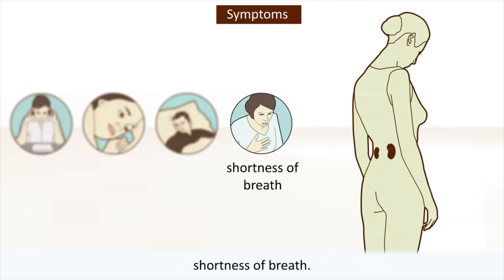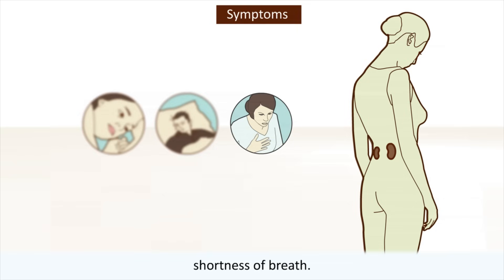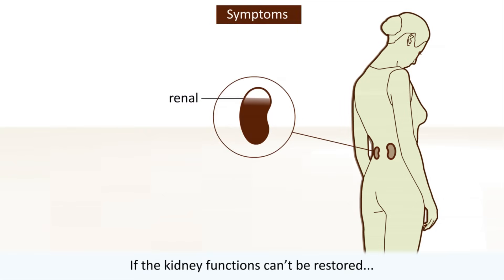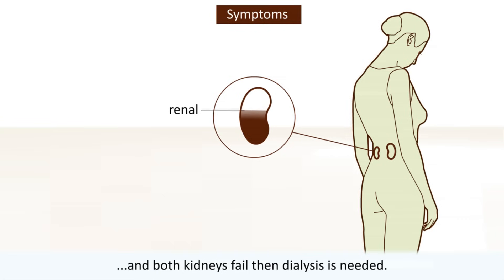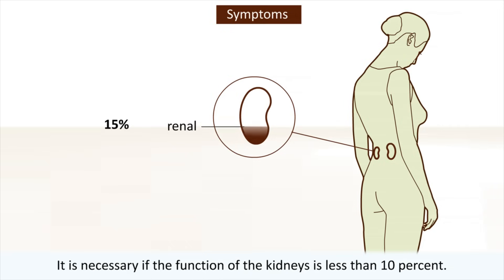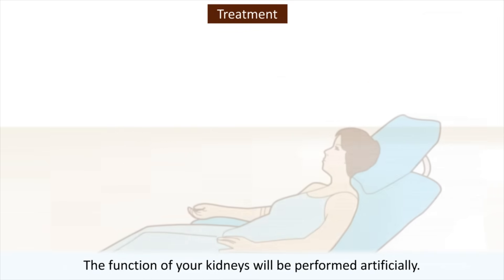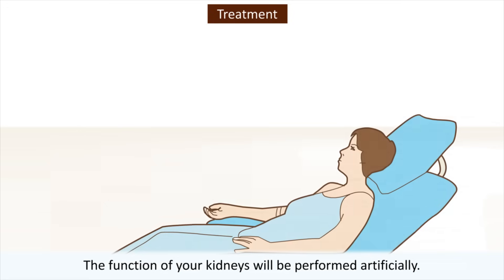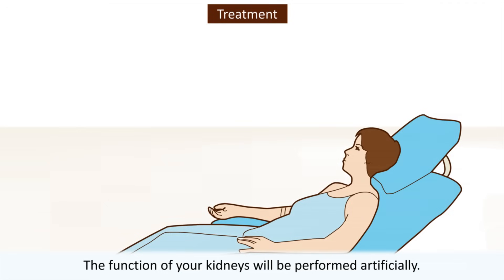If the kidney functions can't be restored and both kidneys fail, then dialysis is needed. It is necessary if the function of the kidneys is less than 10%. The function of your kidneys will then be performed artificially.